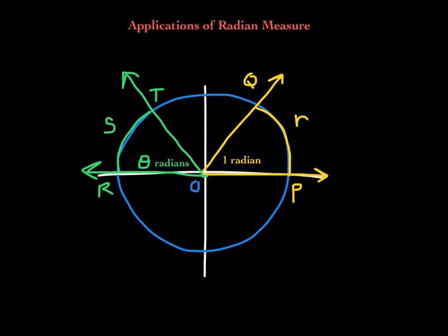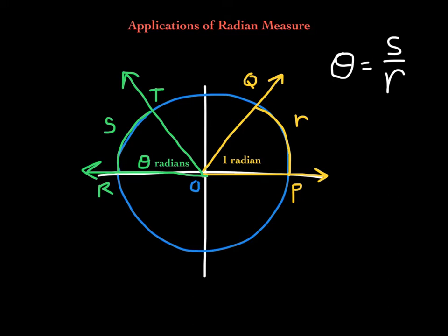In this lesson, we will study applications of radian measure. The formula for finding the length of an arc of a circle follows directly from the definition we looked at in an earlier lesson. For an angle theta in radians, the measure of angle theta in radians is equal to the ratio S over R, where S represents the length of the arc intercepted by central angle theta, and R represents the radius of the circle.